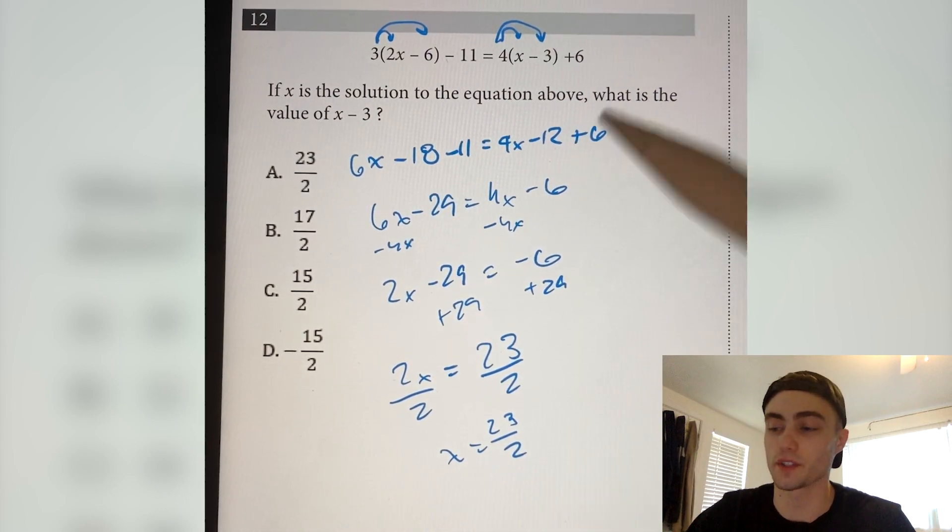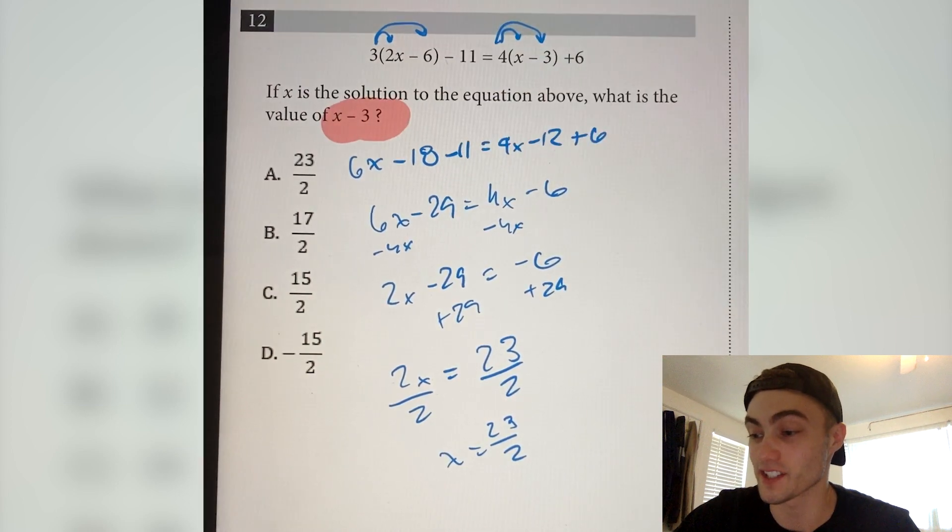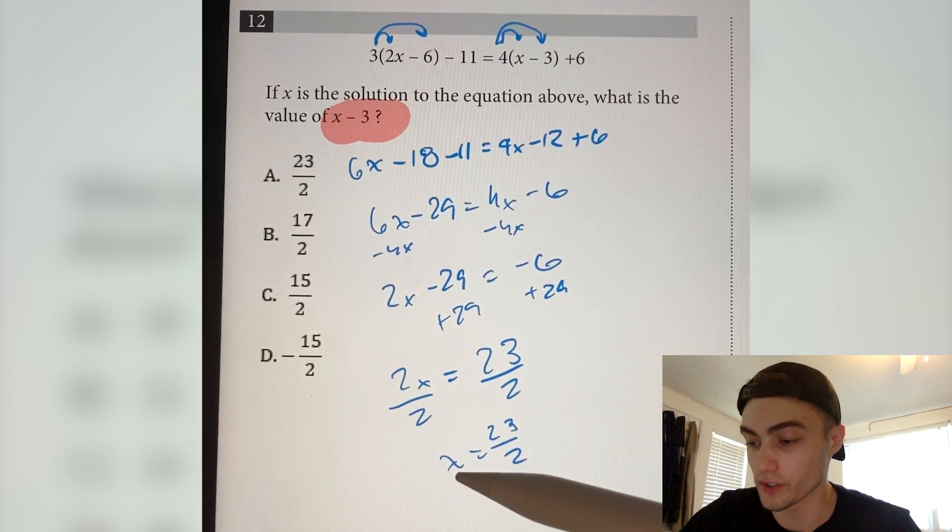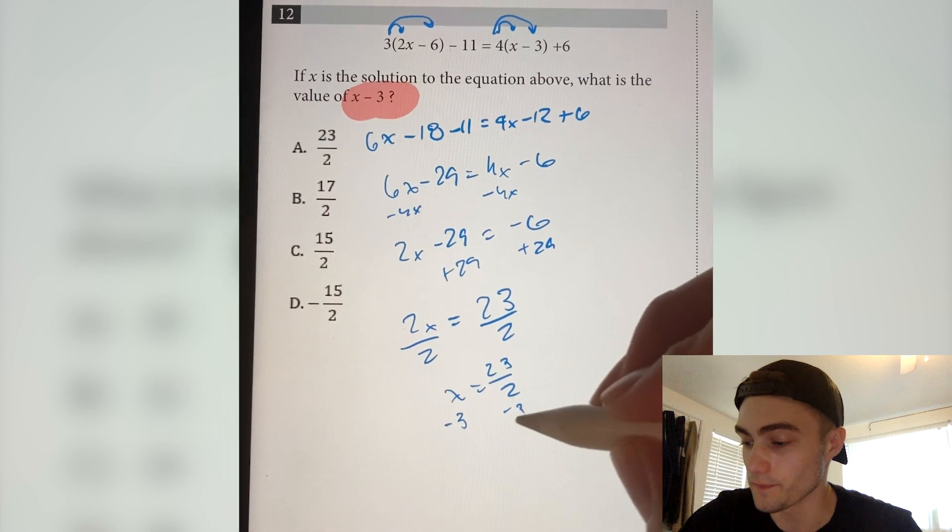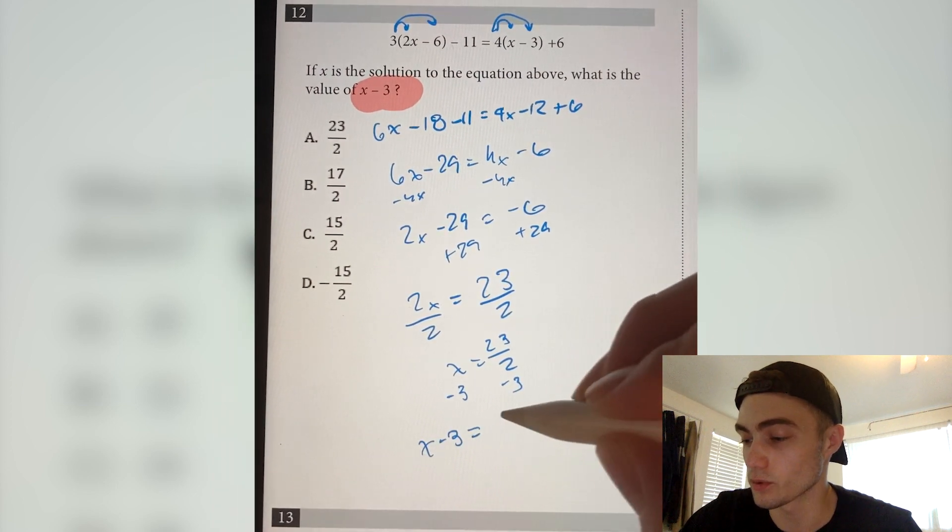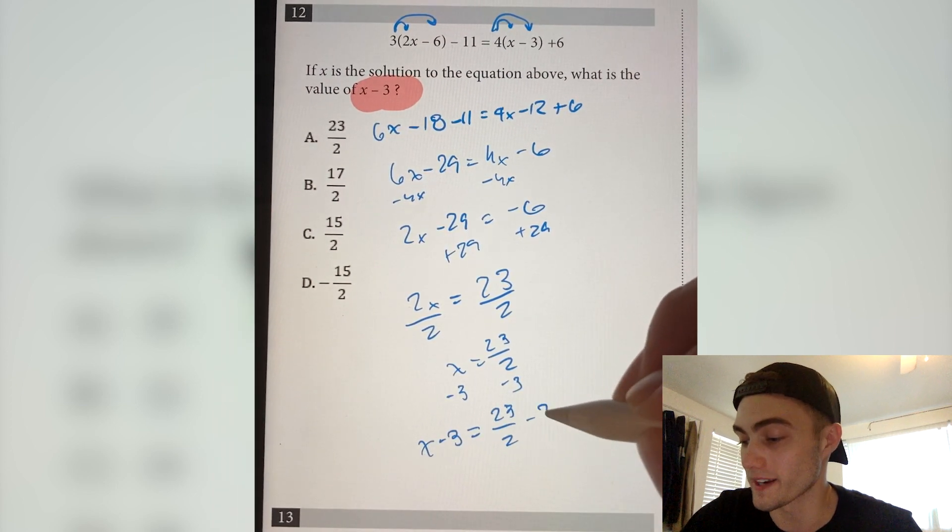So now we have x, but the problem is asking for x minus 3. So what we have to do is we have to subtract 3 to both sides. So if we do that, then we get x minus 3 is equal to 23 over 2 minus 3.